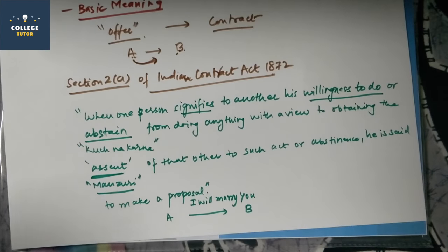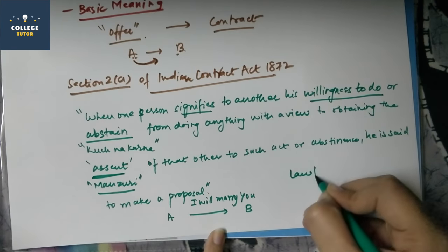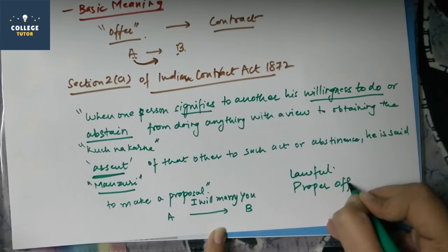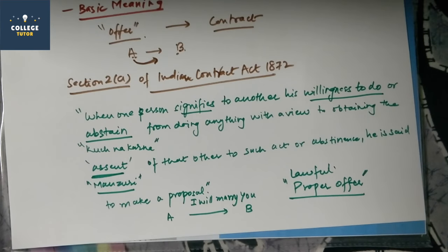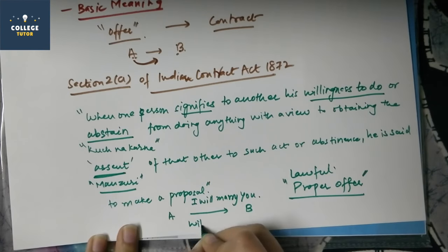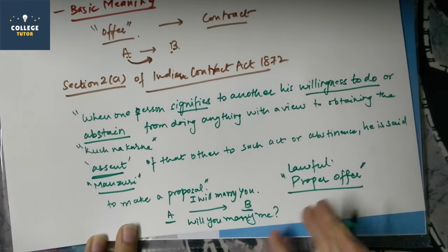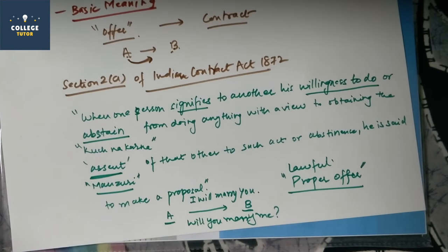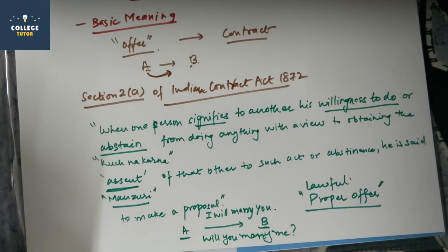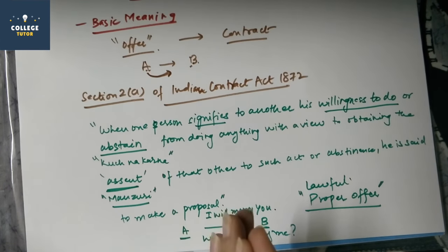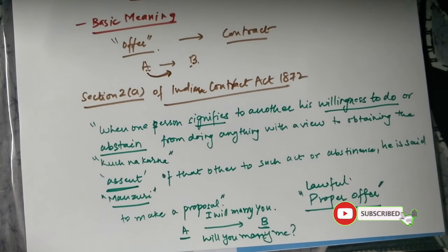We have not essential elements of Indian contract. Essential elements of contract. When a lawful or proper offer, a lawful offer, when a proper offer is made, then a contract will be valid. So if A says 'I will marry you,' he is not offering anything. If he continues, 'will you marry me?', now A is making a proper offer to B which B can accept the offer and reject. So this is a proper marriage proposal A has done to B.